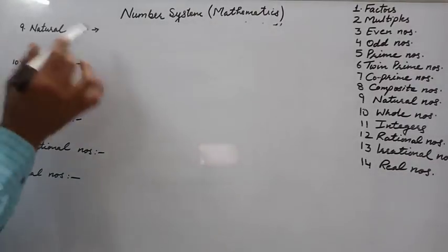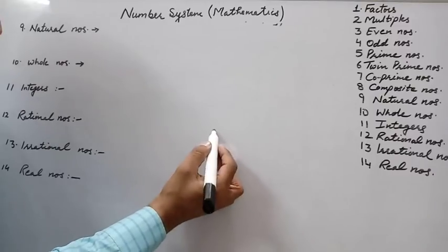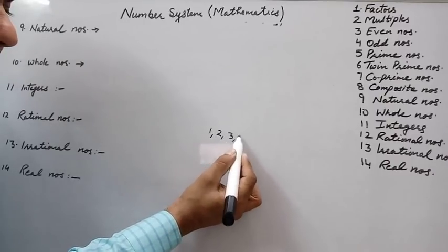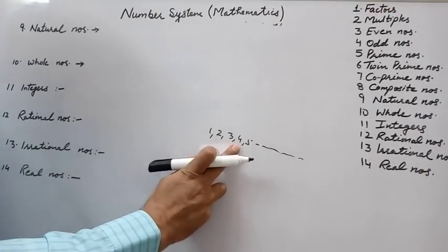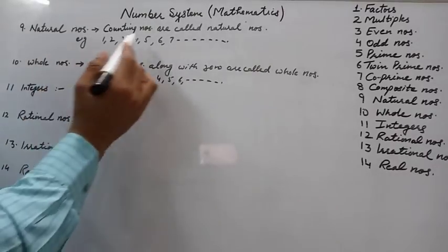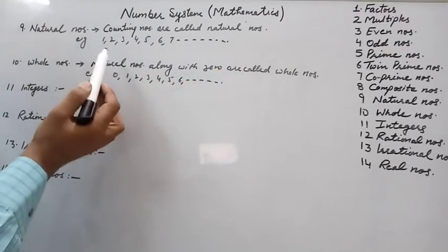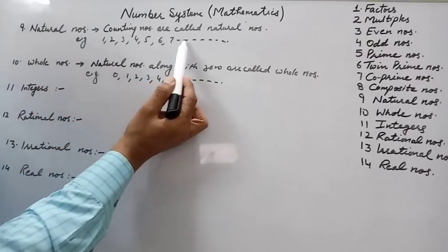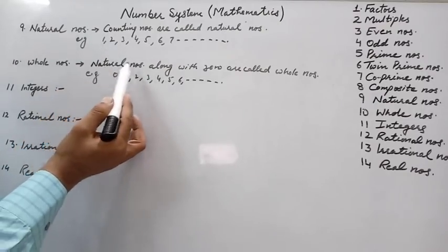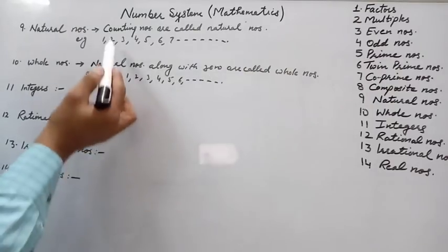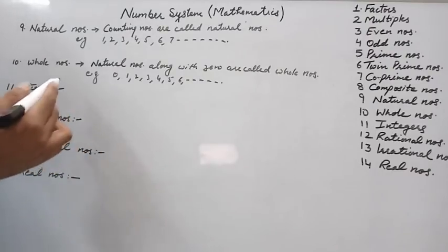Natural numbers are counting numbers, because counting starts from 1. For example: 1, 2, 3, 4, 5, and so on. The smallest natural number is 1 and the largest is not defined. If we add 0 to the natural numbers, we get whole numbers. So natural numbers along with 0 are called whole numbers: 0, 1, 2, 3, 4, 5, 6, and so on.